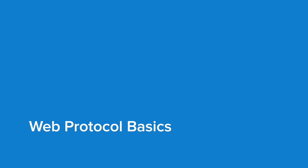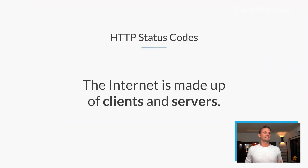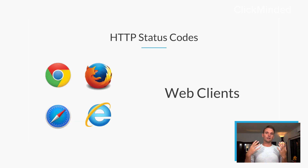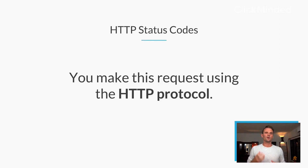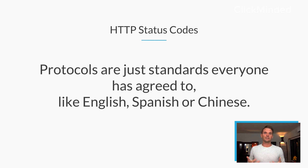Before we jump into 429s, I want to do a brief high-level overview of HTTP protocols and how they work. The internet is made up really of two core things: clients and servers. You have web clients — that's your browser. Maybe it's Chrome, maybe it's Firefox, maybe it's Safari. Maybe it's Internet Explorer. You're usually accessing the internet through one of these clients. Protocols are really just standards that everyone on the internet has agreed to — it's no different than English, Spanish, or Chinese. It's a language that we've all agreed to.